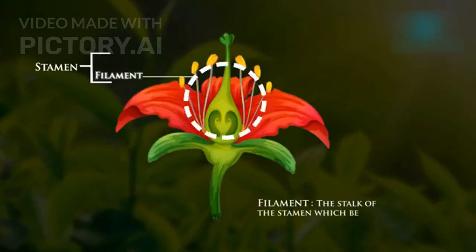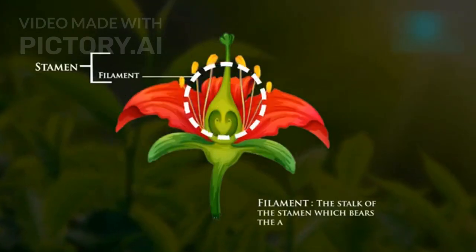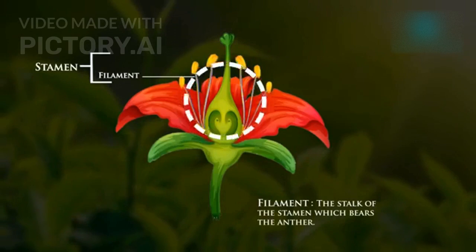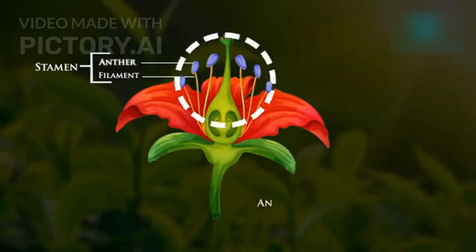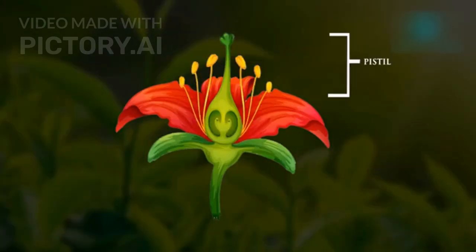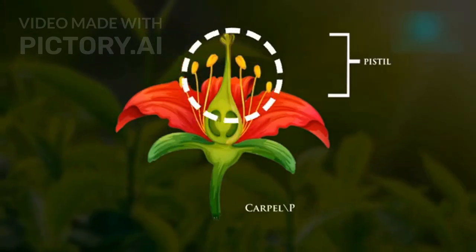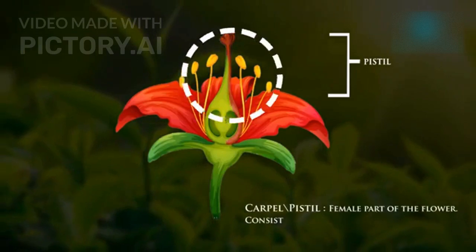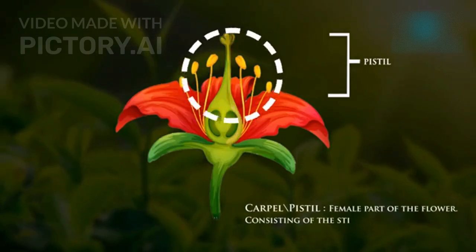3. Androecium — the male reproductive part, consisting of stamens. 4. Gynoecium — the female reproductive part, consisting of carpels.